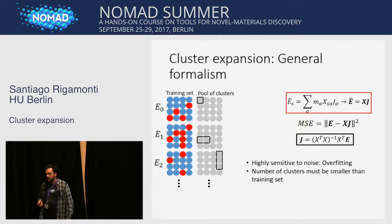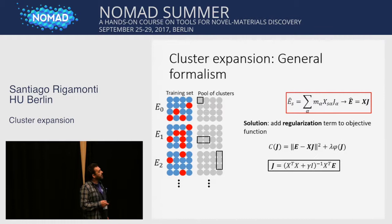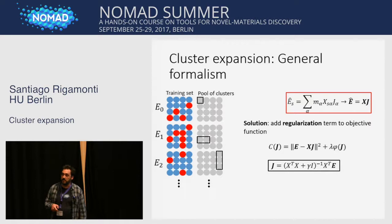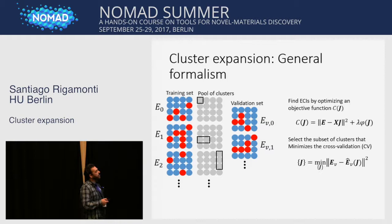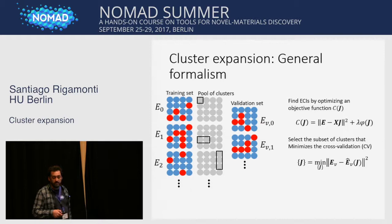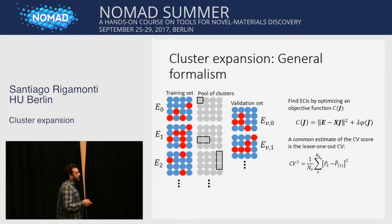However, this matrix cannot be inverted when the number of clusters is larger than the number of structures. Another problem is that it is highly sensitive to noise and leads to overfitting. The solution is to add regularization terms — here the L2 norm — which also has an analytical solution, and this time the matrix can be inverted even if you have more clusters than structures. However, finding the best fit doesn't guarantee good predictability power. What we do is construct a validation set and measure the error between the predictions and this validation set. This is called the cross-validation score, which will be the subject of Axel's talk.